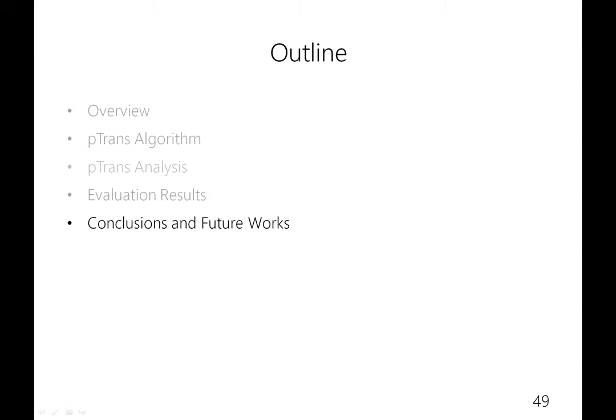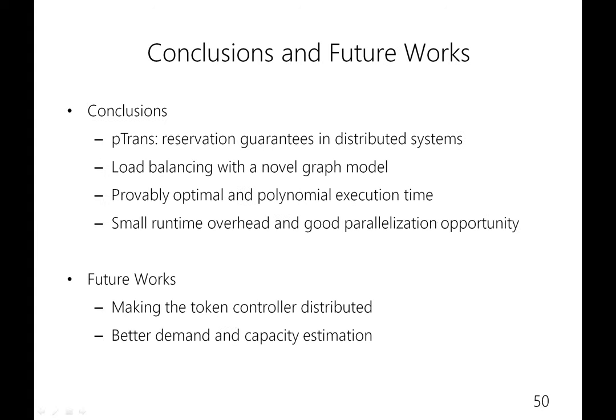Finally, let me give the conclusions and discuss future work. In conclusion, in this paper we present the P-Trans algorithm for reservation guarantees in distributed systems. It models the token allocation problem using load balancing with a graph data structure — the Prudent Transfer Graph. It is provably optimal and has polynomial execution time. Compared to other approaches such as LP, P-Trans has small runtime overhead and good parallelization opportunity. In future work, we will make the token controller distributed and study how to make better demand and capacity estimation. That ends my talk — I'm glad to take questions. Thank you.